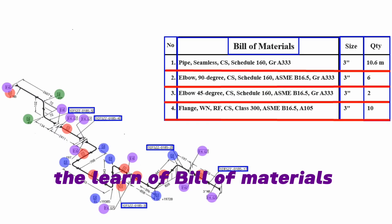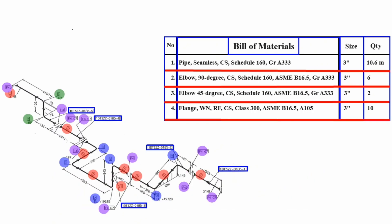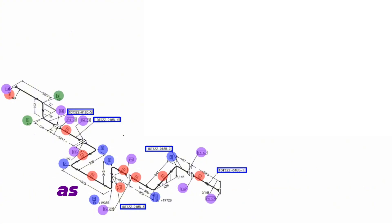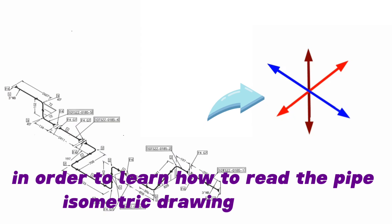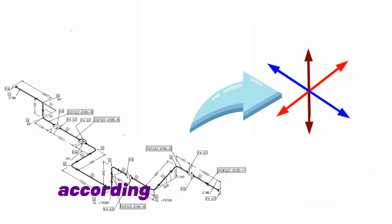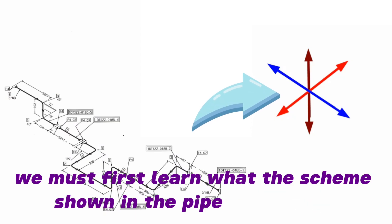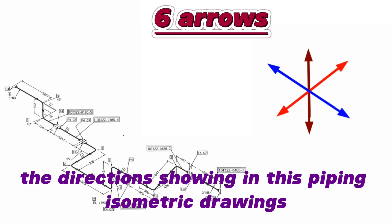The bill of materials study is successfully completed. Now let's read this piping isometric drawing as per the shown direction arrows. In order to read the pipe isometric drawing correctly, we must first learn what the scheme shown in the pipe drawings is and its function. There are six direction arrows shown in this piping isometric drawing.